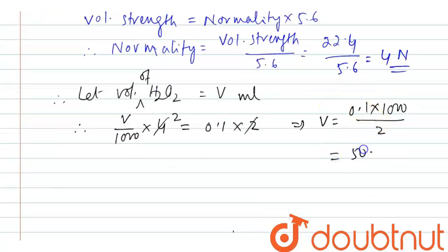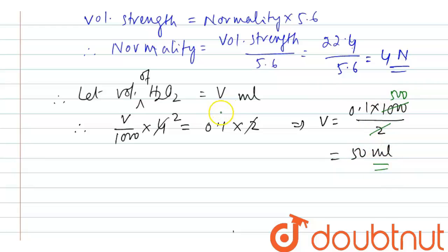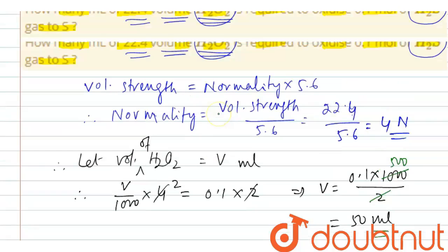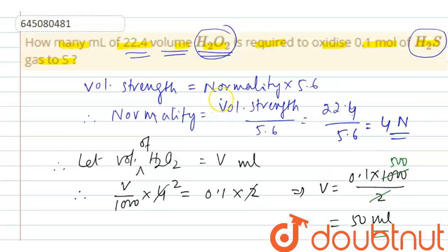Therefore, the volume of hydrogen peroxide required is 50 ml. Thank you.